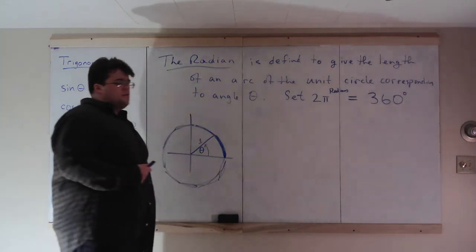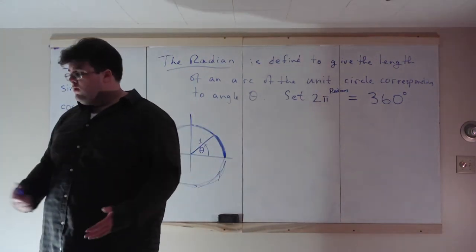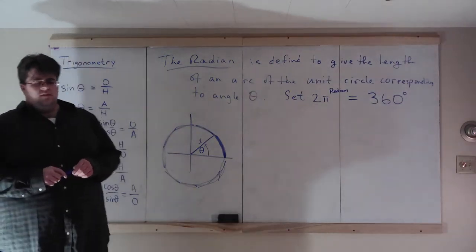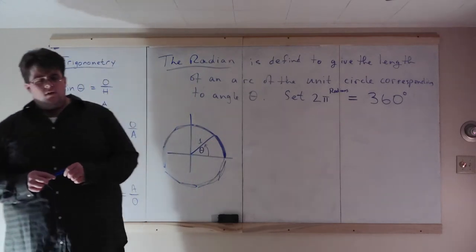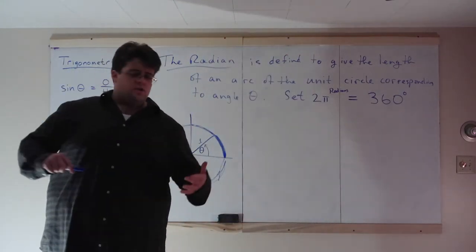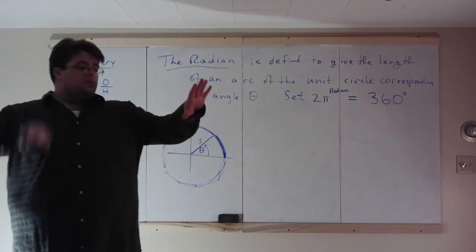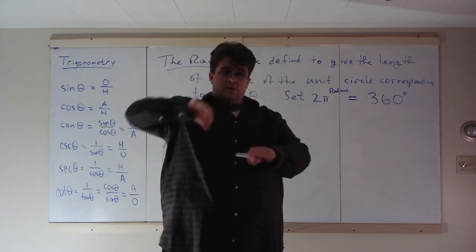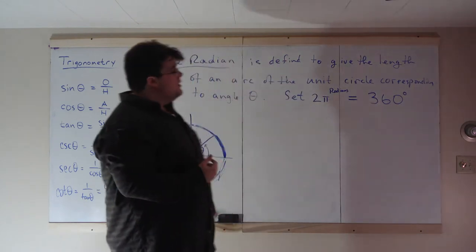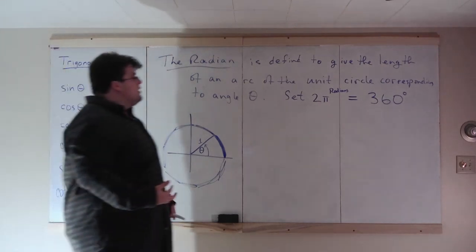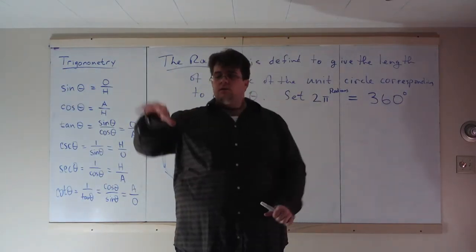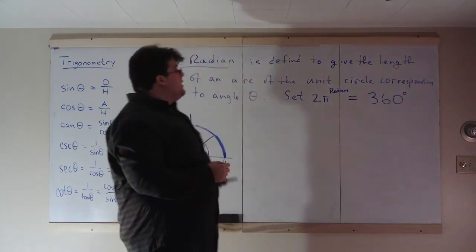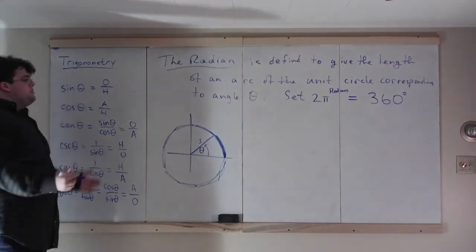So we have a unit conversion. Converting inches to centimeters uses 2.54 centimeters per inch — you multiply to cancel units. Right here is another unit conversion: π radians equals 180 degrees. If you want to convert from degrees to radians, you multiply degrees by (π radians / 180 degrees) — degrees cancel and you're left with radians.